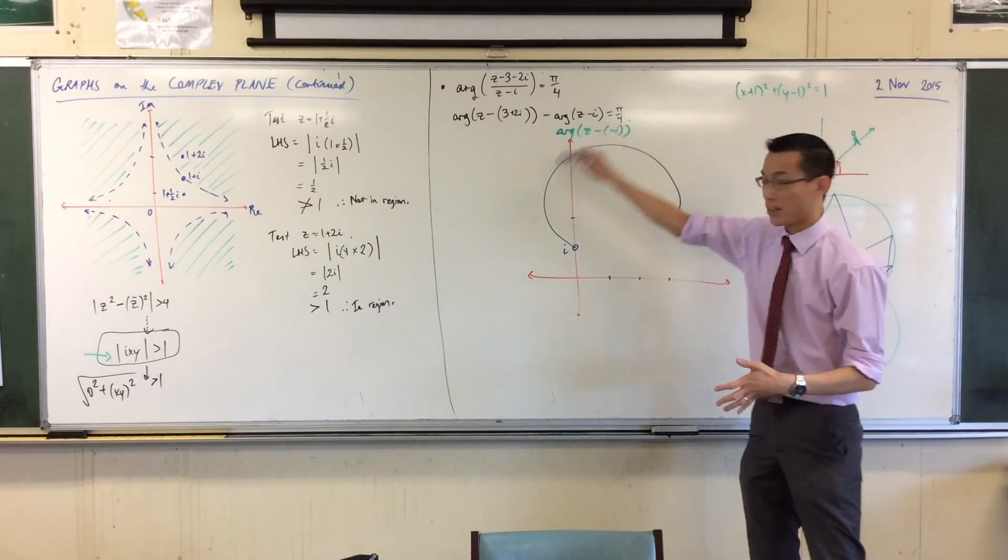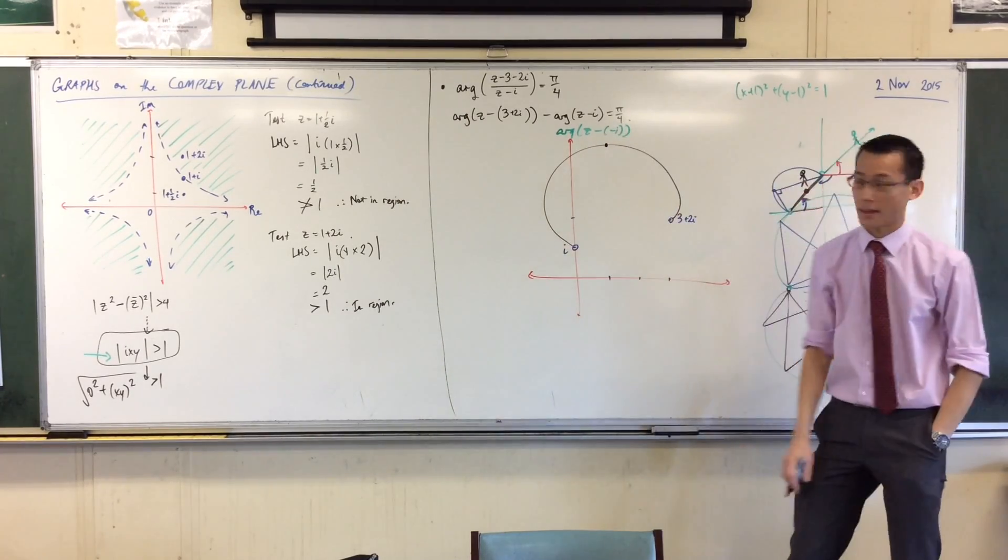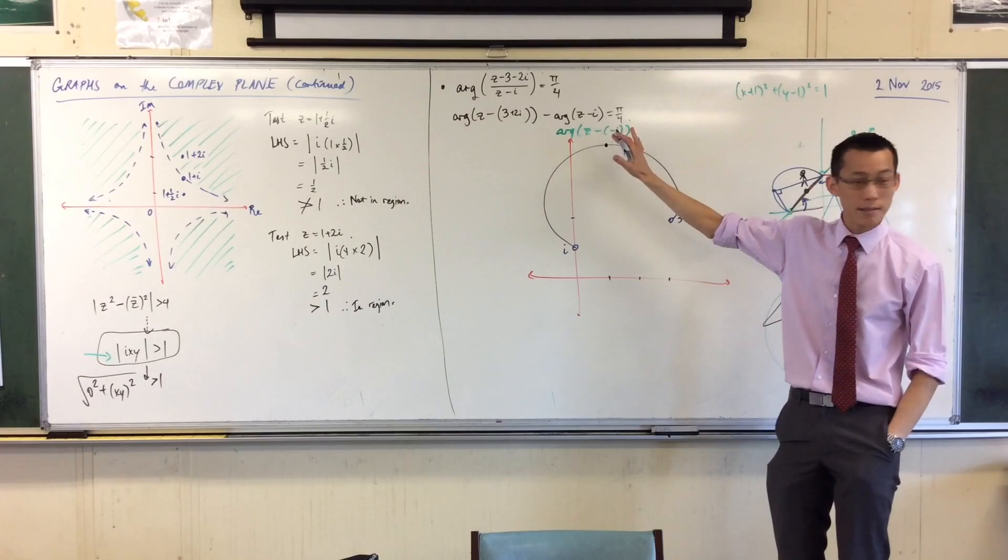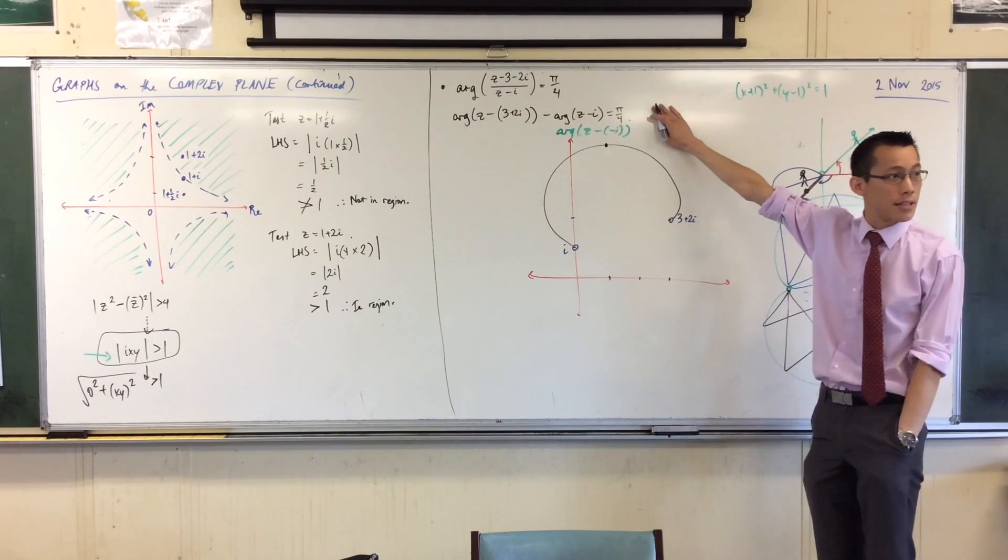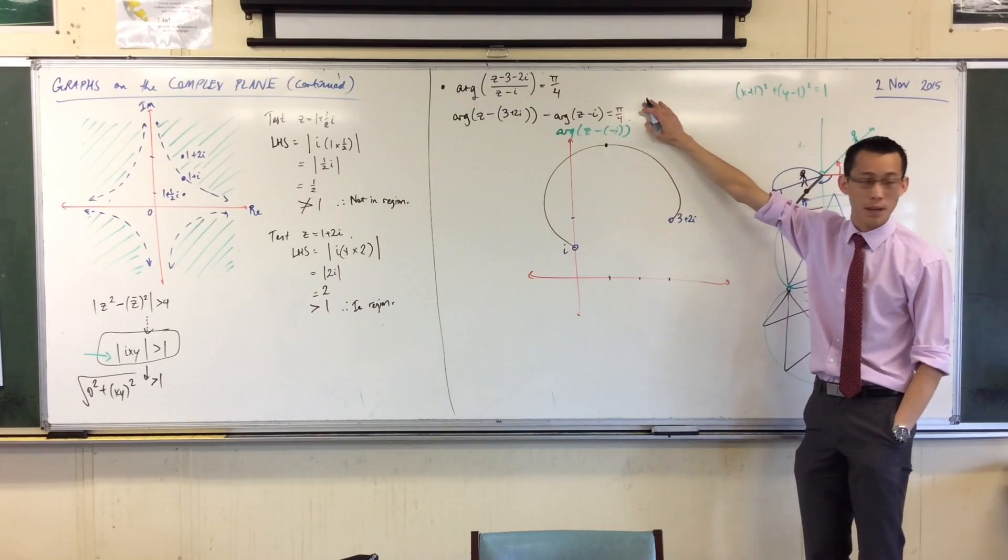If I'm saying, this is my locus, that means any point on here, like say, here's a point, here's a point up there. There's a potential Z, and it should satisfy this statement up here. When I compare these two arguments, I do one, take away the other, I should get pi over four.